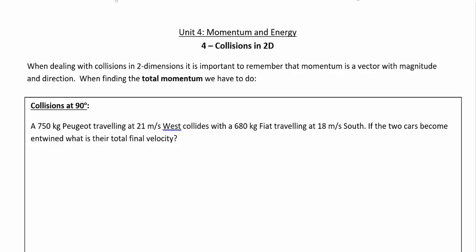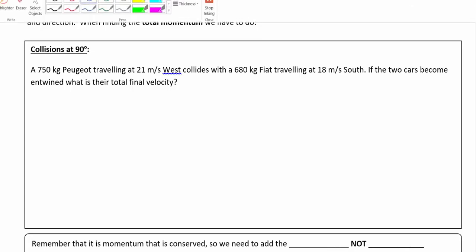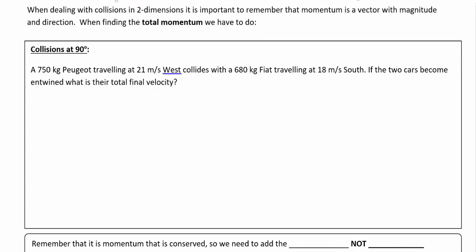So even if we have a two-dimensional situation, our same rules are going to apply. In this example, we have a Peugeot — a small car traveling 21 meters per second west — colliding with another small car, a Fiat, which is traveling 18 meters per second south. If the two cars become entwined and stick together after the collision, what is their total final velocity?